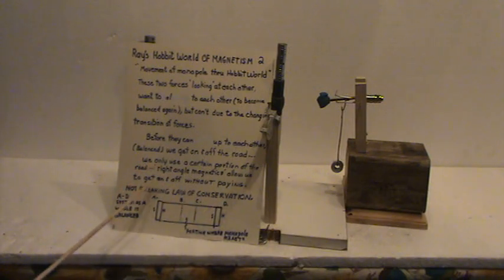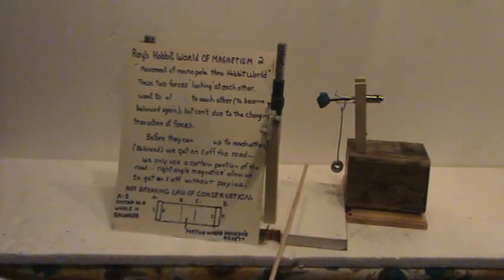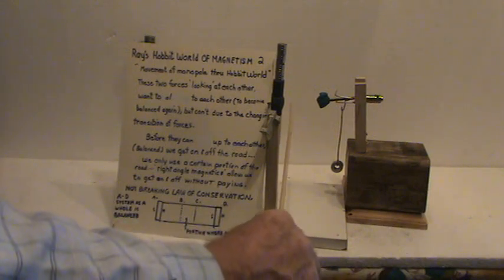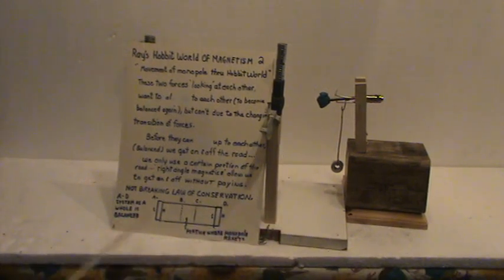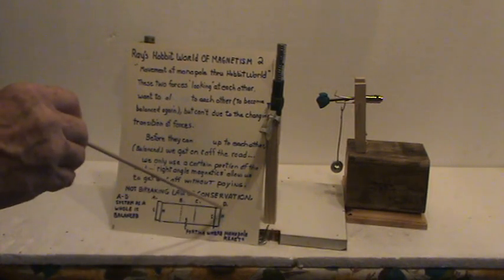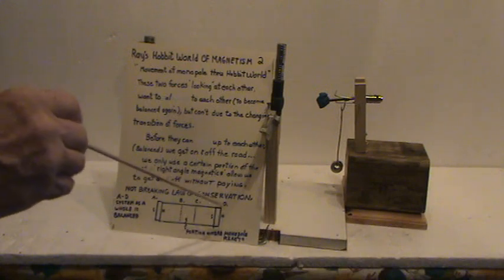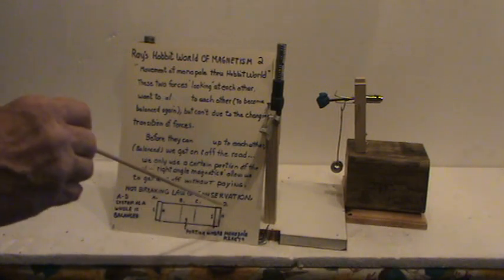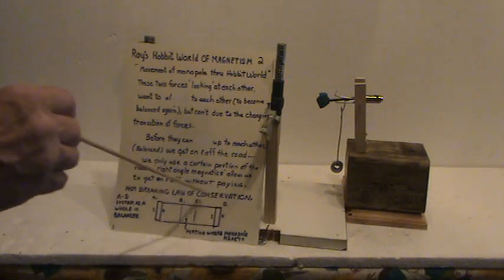We use only a certain portion of this road. Right angle magnetics allow us to get on and off without paying. And that's what this gate was I was testing. Right in here. When I'm saying I put a penny's worth of energy in and getting five cents out, sounds like I'm getting something from nothing. But I never really explained that. I am not breaking the law of conservation. From A to D, this system as a whole is balanced. So there is no breaking of any law at all. And we won't even as we get into this.